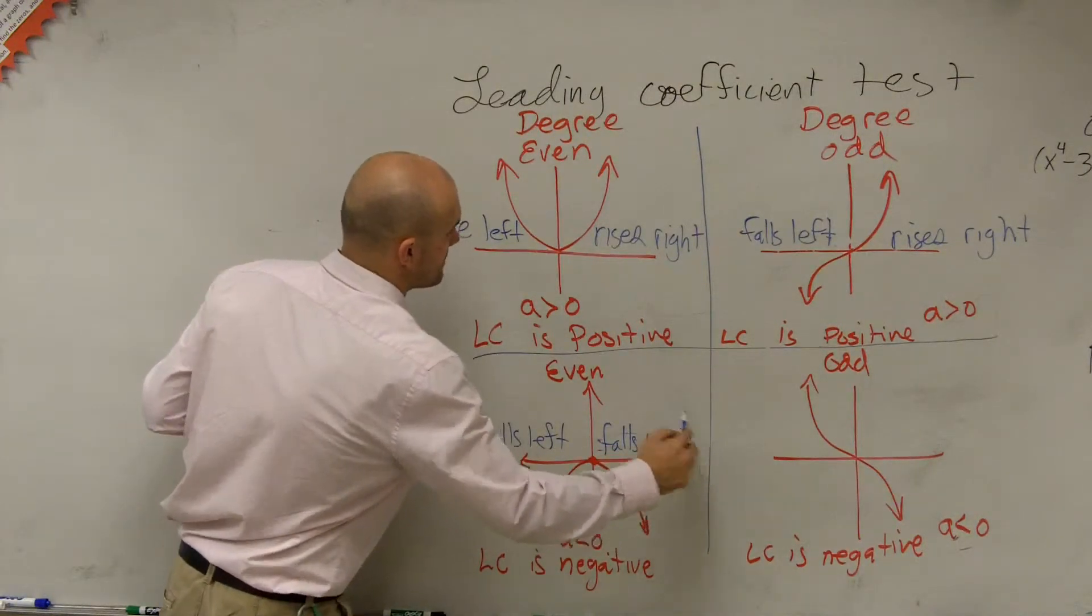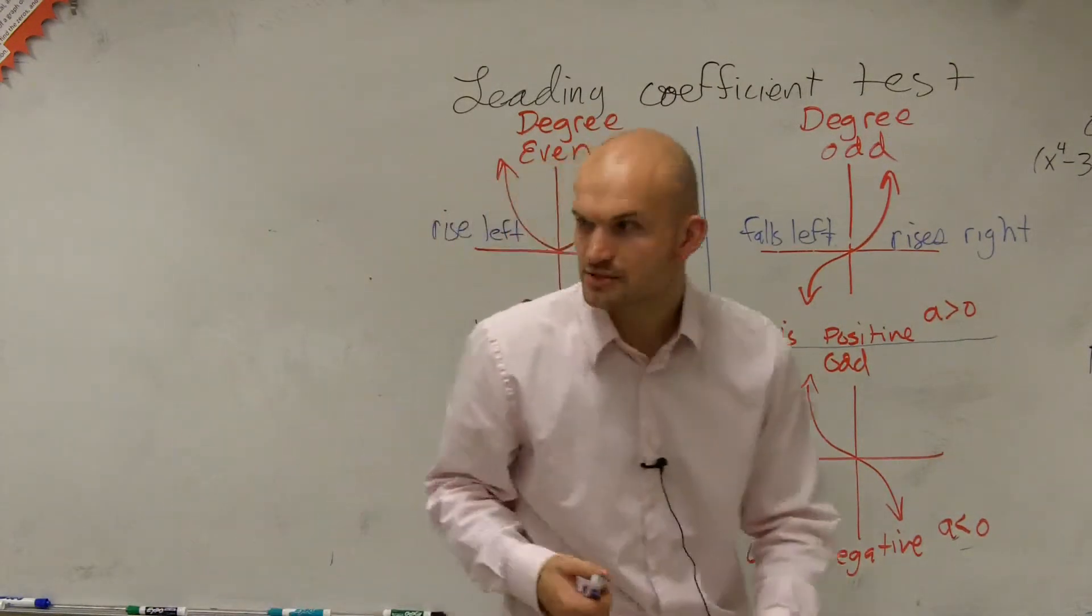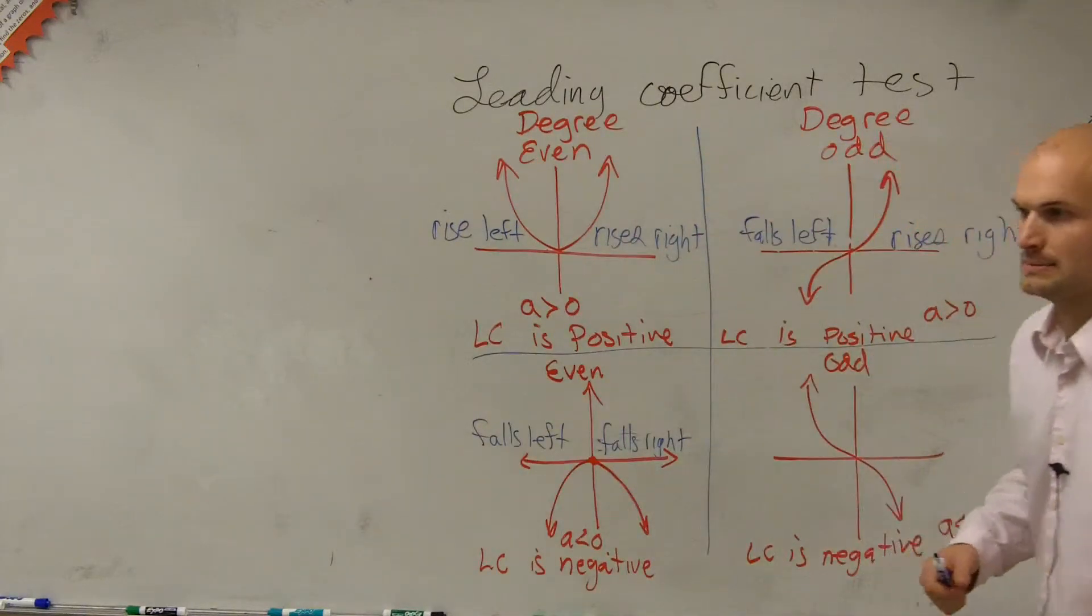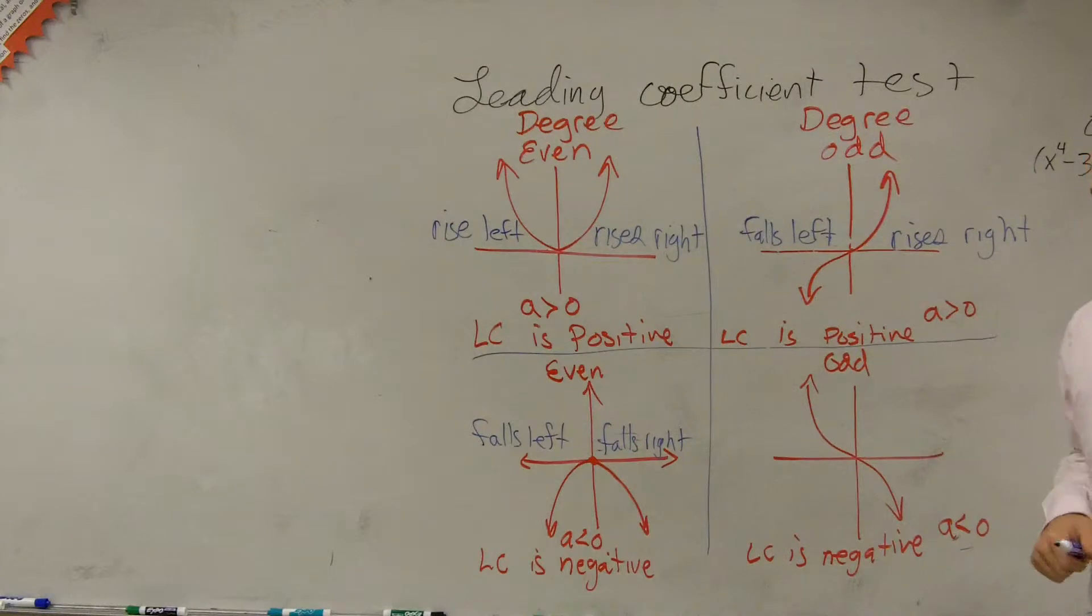Yes, Emma? What else? What could it be? Sure, yeah, it could be x to the 5th. Right? Let's say f of x equals 3x to the 5th minus 7.